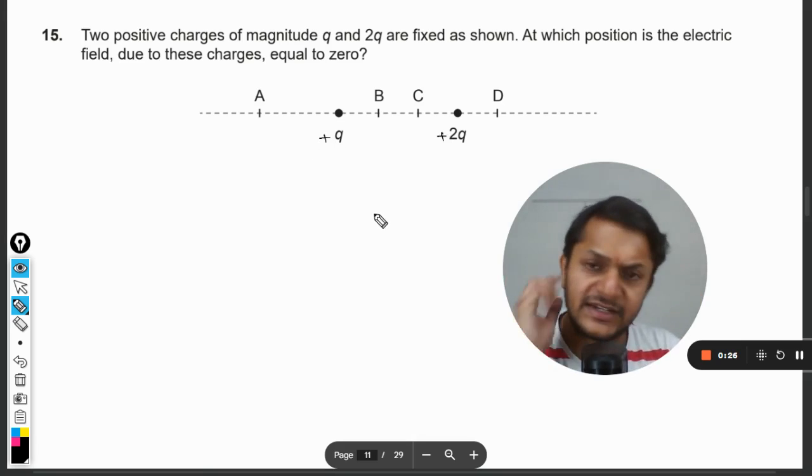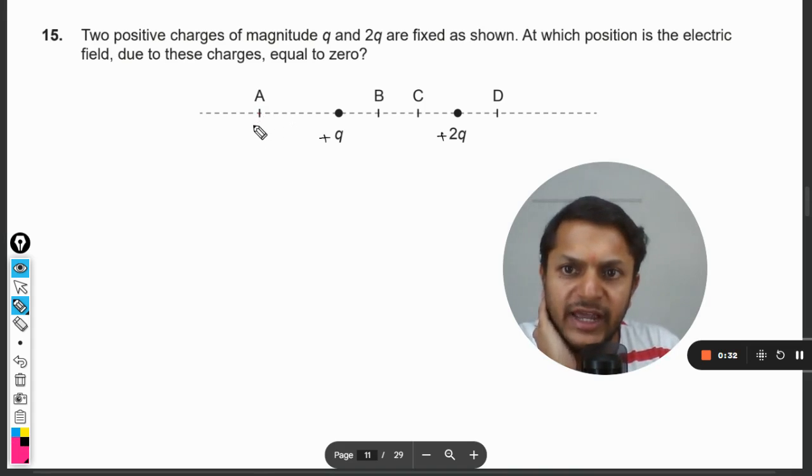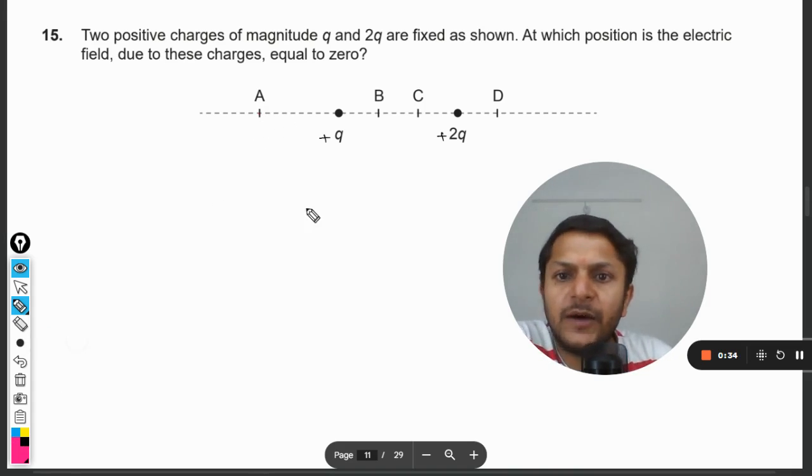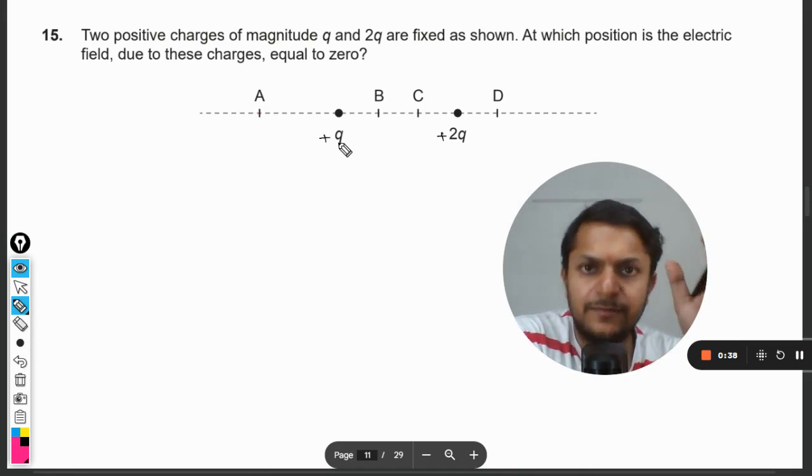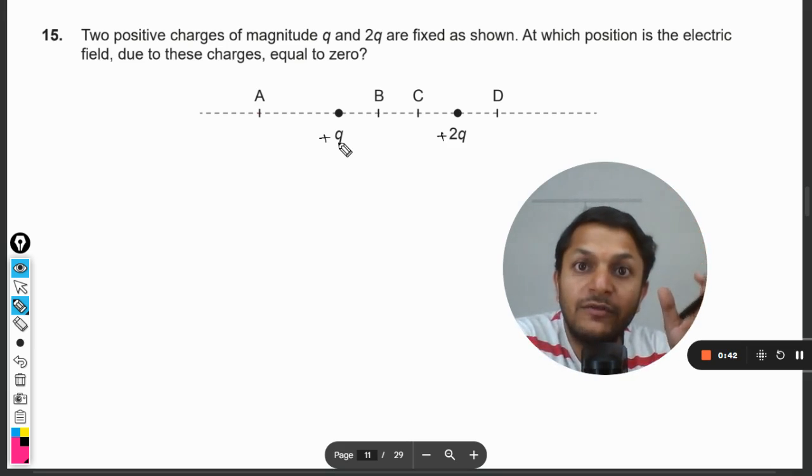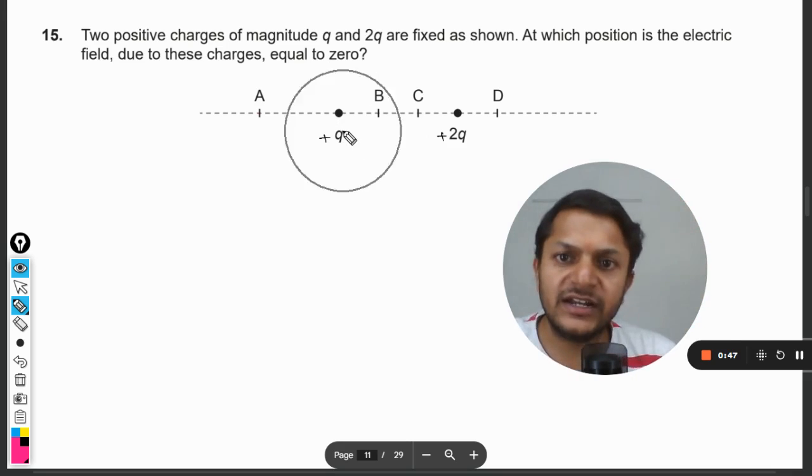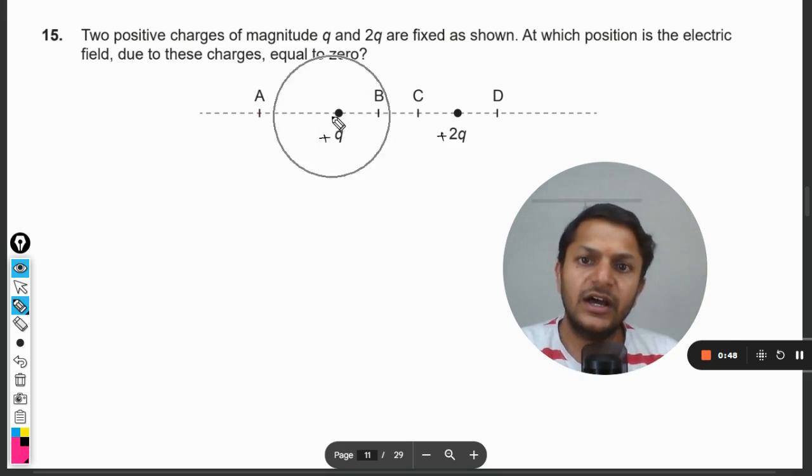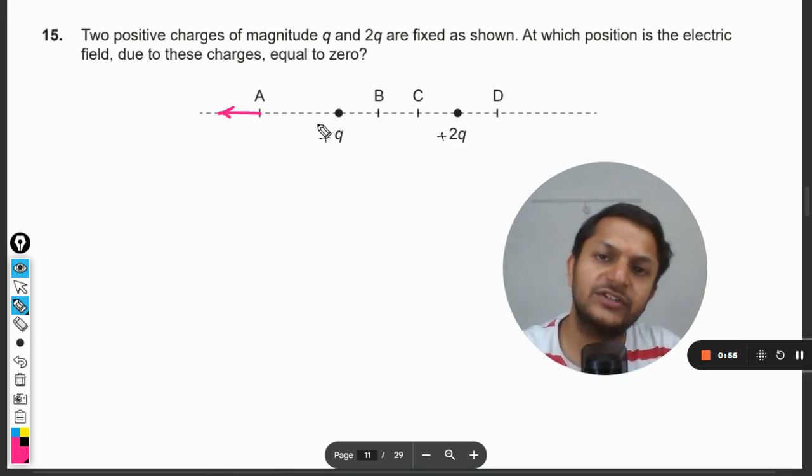What could be the point? Let us just imagine at point A. The positive charge, the electric field direction is always away from the positive charge. This is the positive charge and the electric field direction by q will be away from it, so it will be in this direction. It is nearer to it so the field is strong.